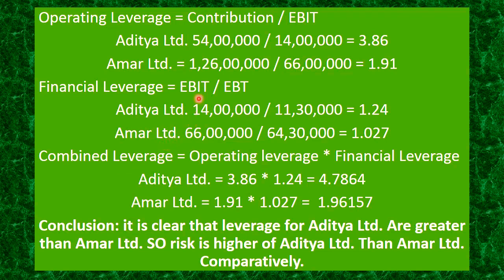Combined leverage is simply operating leverage multiplied by financial leverage. For Aditya Limited, it is 3.86 multiplied by 1.24, giving 4.7864. For Amar Limited, it is 1.91 multiplied by 1.027. These are the final leverage ratios. Conclusion: it is clear that all leverages for Aditya Limited are greater than Amar Limited, so the risk is higher for Aditya Limited comparatively. That is the complete problem.